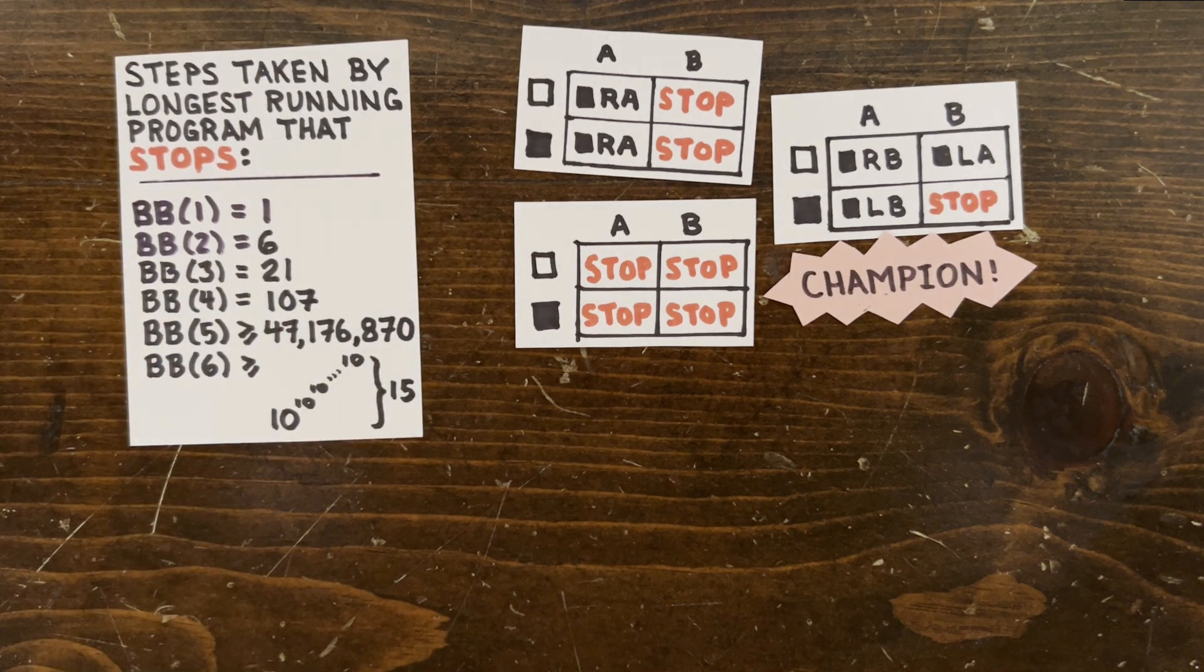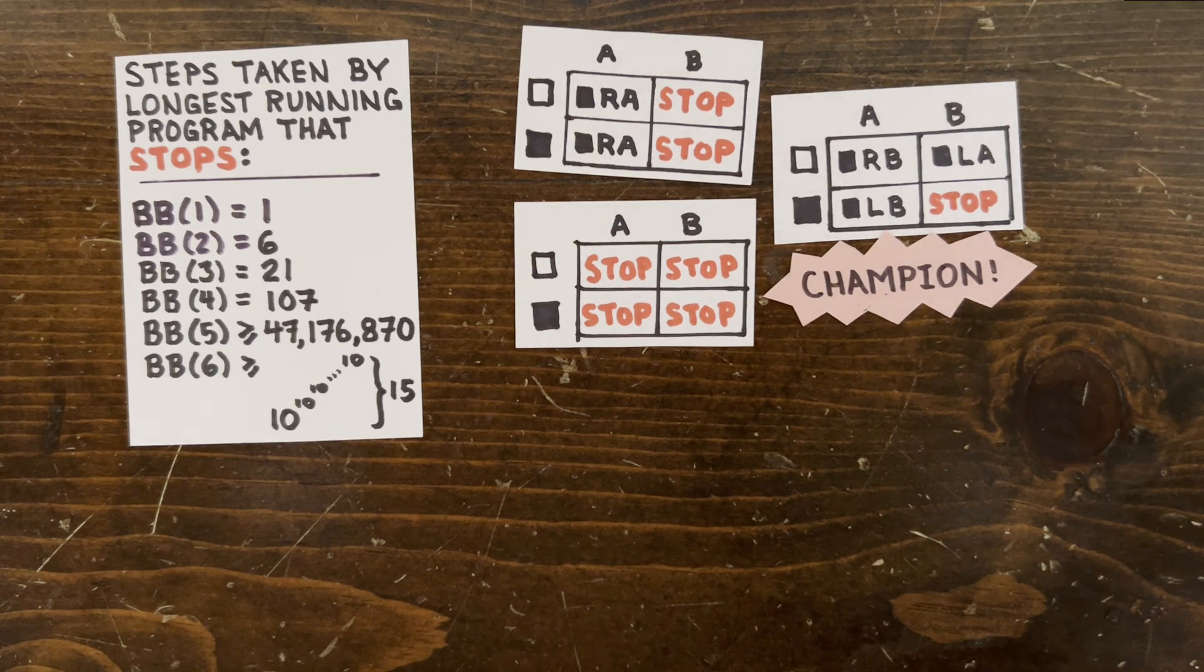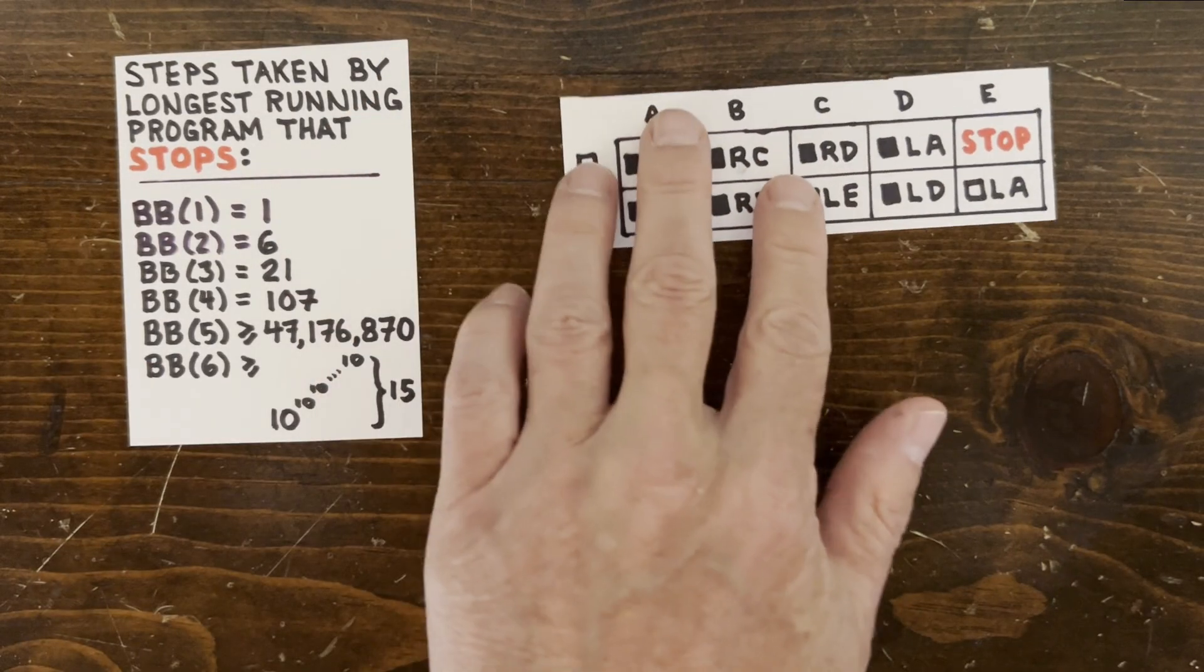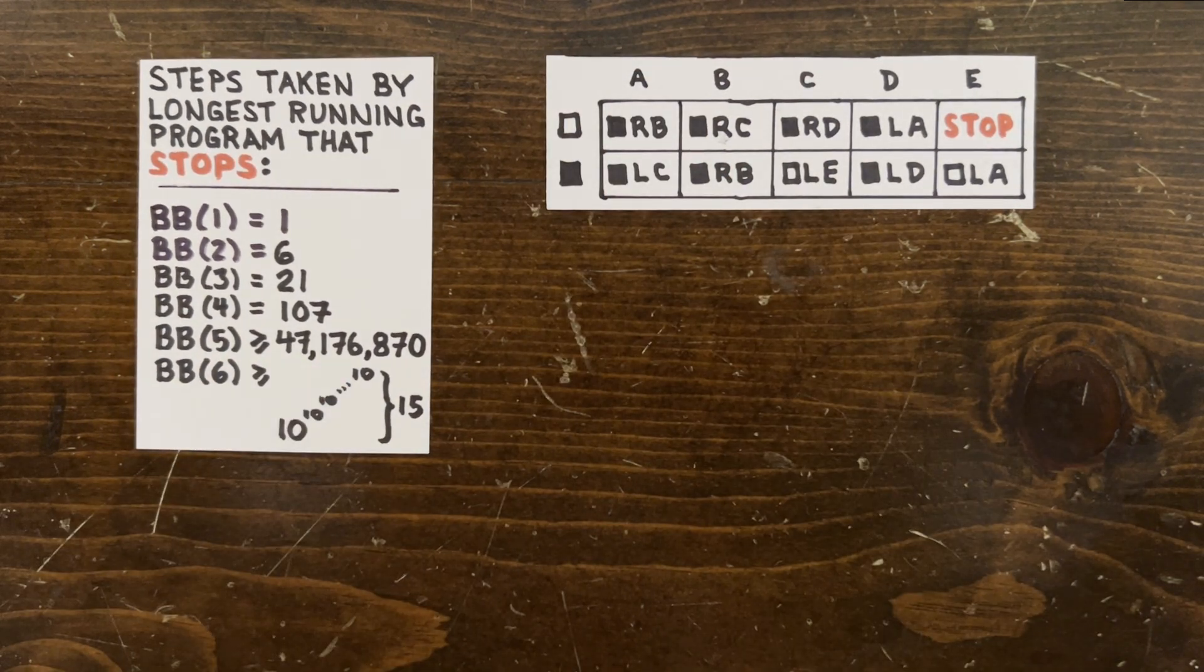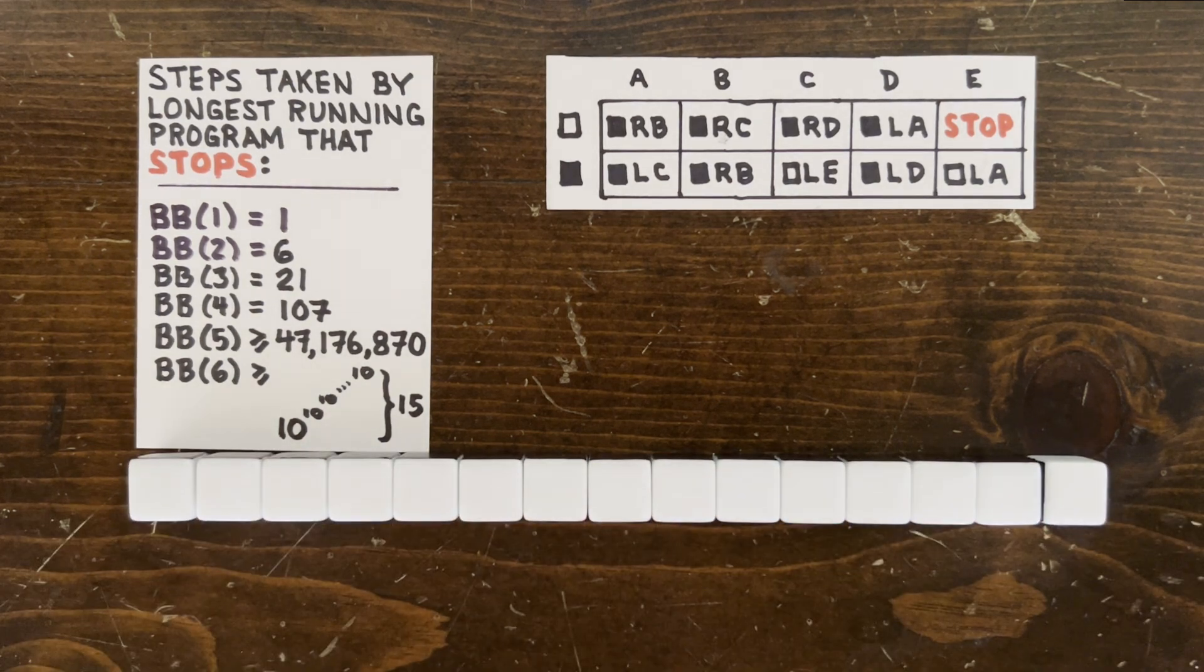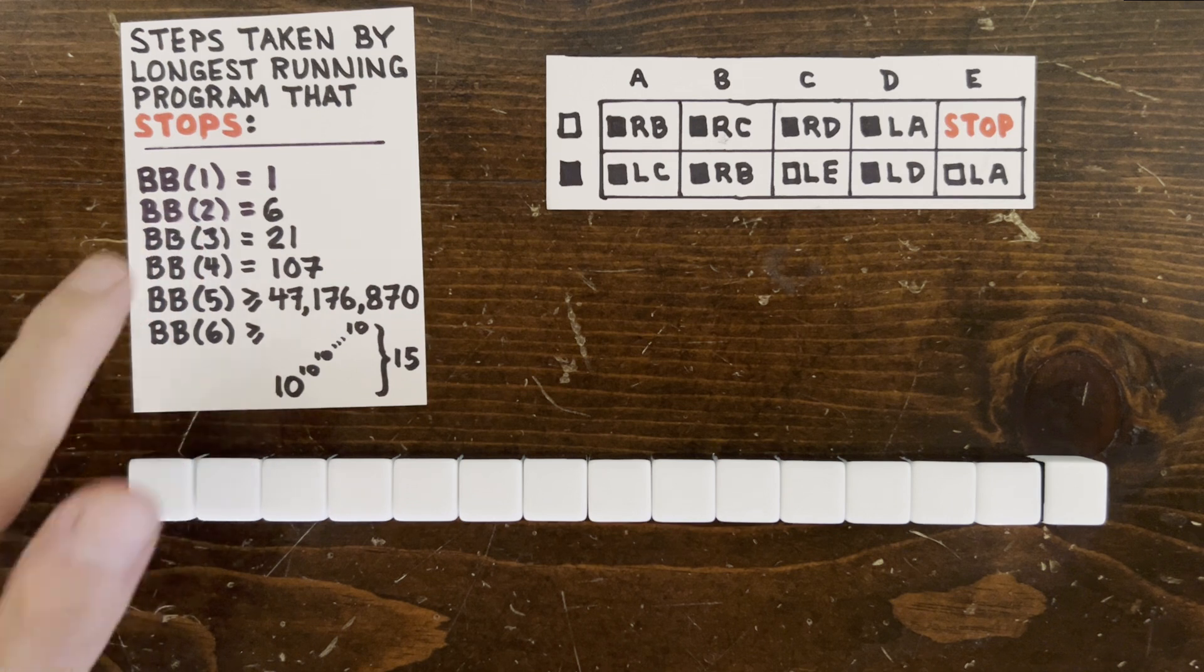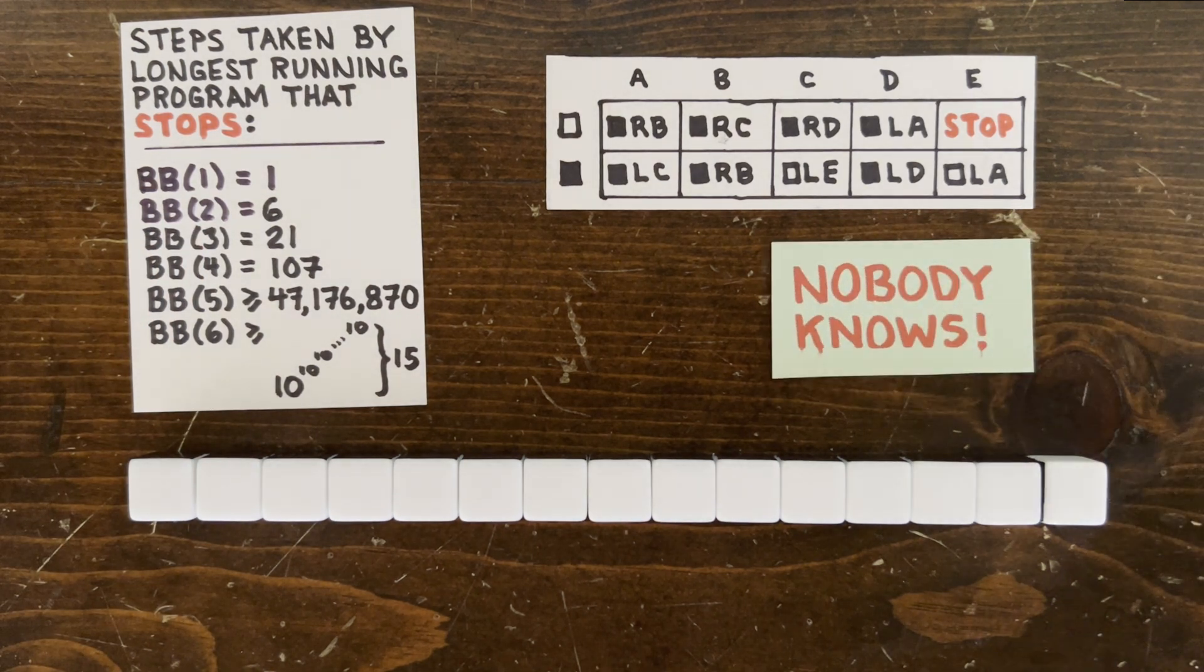Now people sifting through five state programs, of which there's more than 88 million, have found one program that runs for a whopping 47 million steps before stopping. Here it is. It's easy to find programs that run longer, but so far it seems those are going to run forever. Is it possible that one of them will suddenly stop after some huger number of steps and become the new champion? Nobody knows.